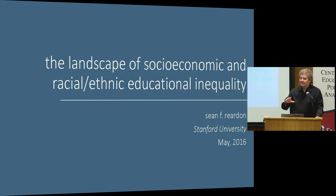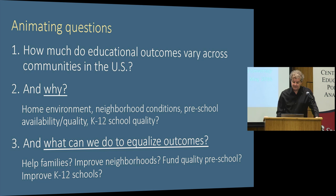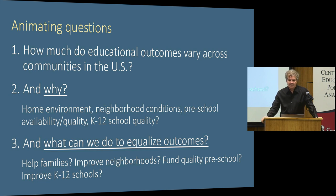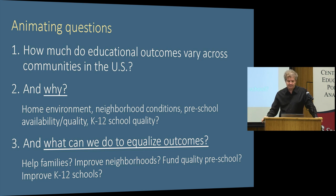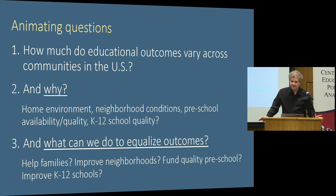What I want to do today is use those data to give you the big picture landscape of what educational inequality looks like in the United States and what we're learning about it from these new data, as a way of setting the stage for the rest of the conference. The big animating questions — the things that drive the work we've been doing — are questions around the distribution of educational opportunity in the United States, both in a geographic sense and by socioeconomic status, by race, and by gender.